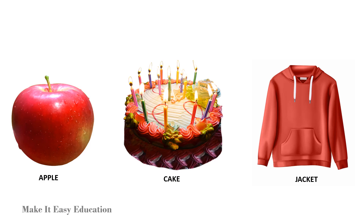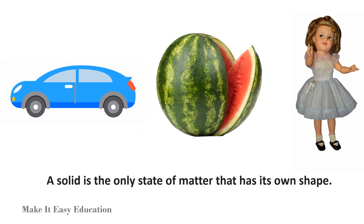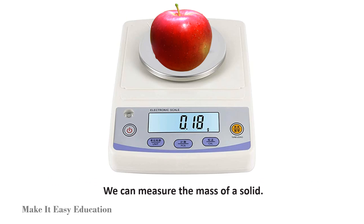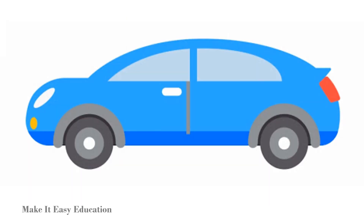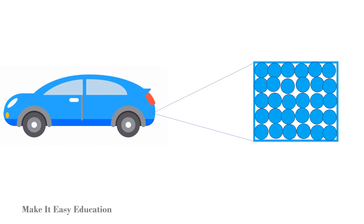Do you know what state of matter these three objects belong to? Yes, these are solids. A solid is the only state of matter that has its own shape. We can measure the mass of a solid. Solid objects hold their shape. In a solid, the particles are tightly packed. The particles are fixed in place and cannot move. So solid objects have a fixed shape.